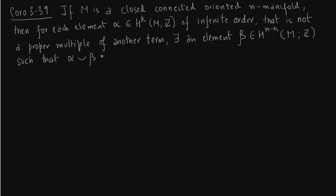So this is such that α cup β is a generator of the nth cohomology group. So this is given on page 250 of Hatcher, you must read it. So the proof is very simple.